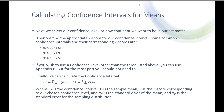Once we know the standard error for our sampling distribution, we next need to determine the appropriate confidence level, or how confident we want to be in our estimates. Once we've determined that — whether it's 90%, 95%, or 99% — we can use the corresponding z-score. For a 90% confidence level, it's 1.65; for 95%, it's 1.96; and for 99%, it's 2.58, referencing back to those z-scores we calculated earlier in the semester.